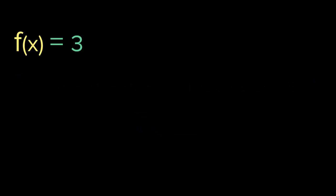Let me give you a couple of examples. Let's say we have f of x, which is a function, equals three. What is the derivative of this function? Well, the derivative is zero. f prime of x is zero. The derivative of a function that is a constant is zero.